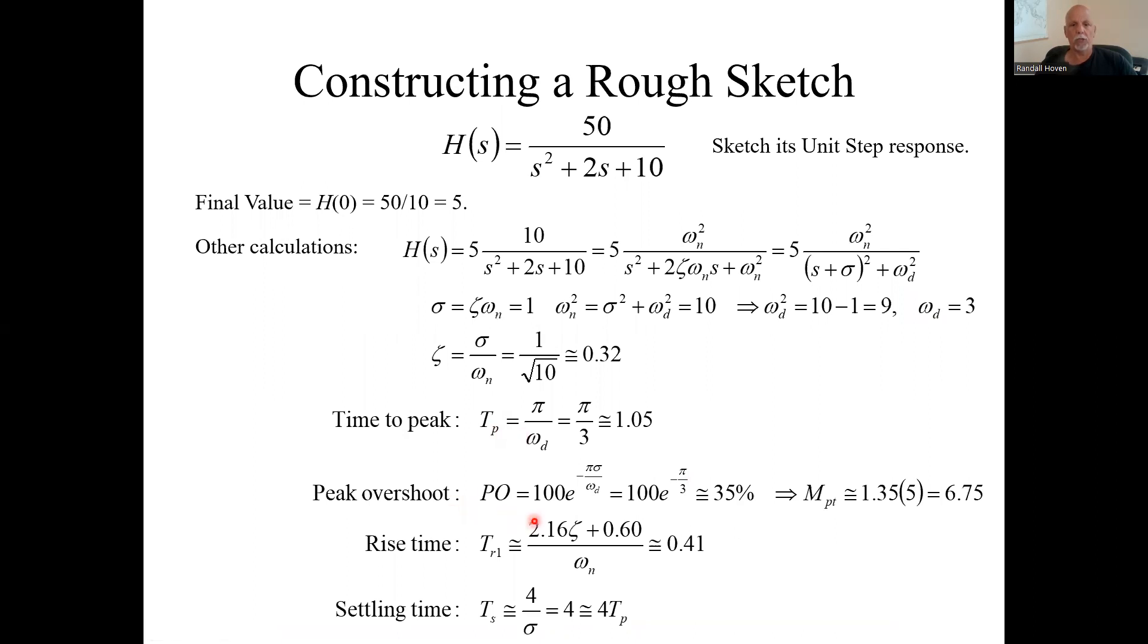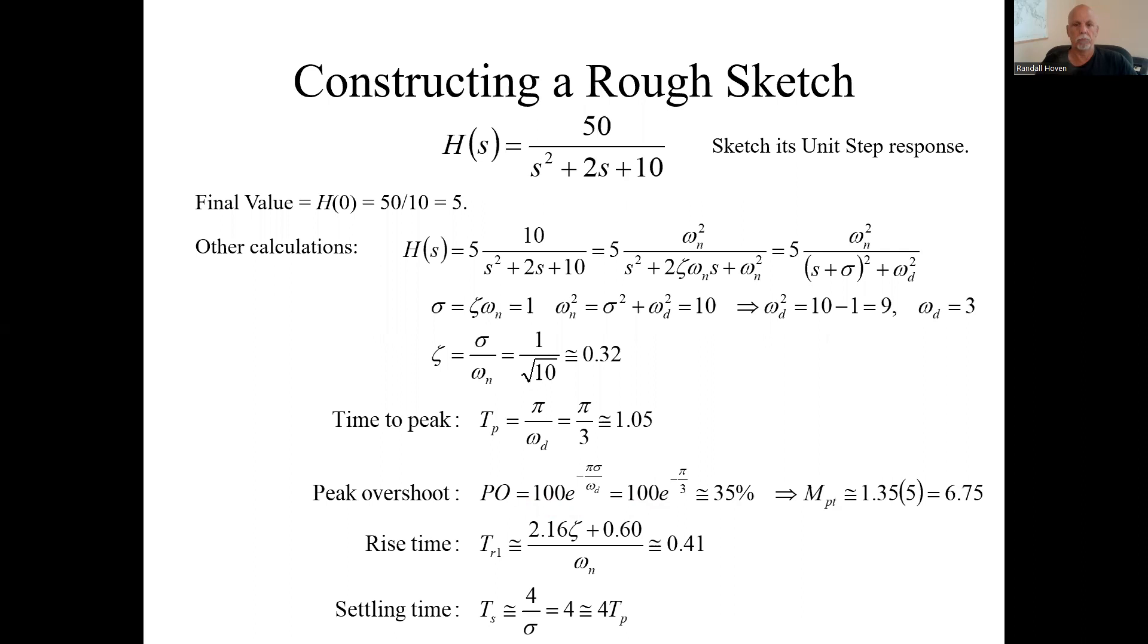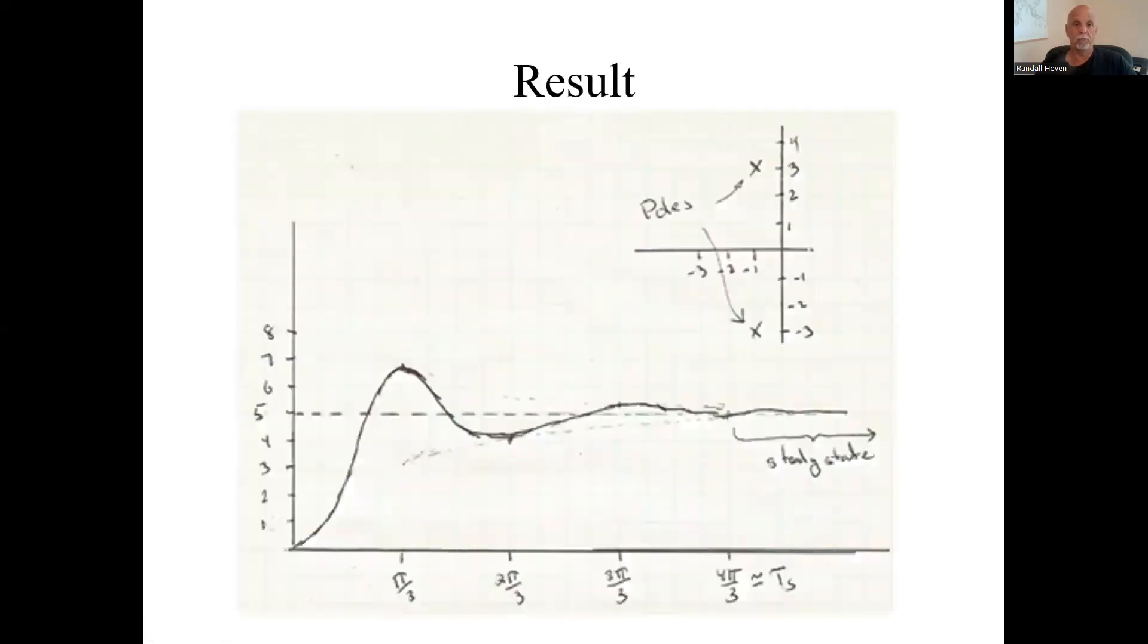Okay, we have that time to peak. We also have the peak overshoot. We're just using the formulas for that. Let's see. Here's our formula sheet. Peak overshoot. It's 35%, which meant that peak point was at 1.35 times the final value, which in our case is 6.75. Now, we plot a point at that t sub peak, the peak overshoot, we go up to 6.75. Put that little point there. So far, all we've done is come up with this dashed line, the increments along the bottom axis, and this point.